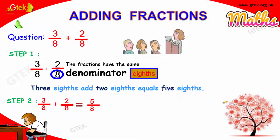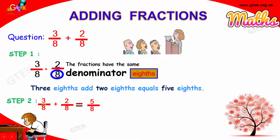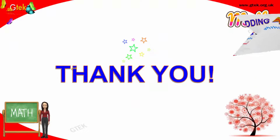Now we will see how to add fractions. We have 3 divided by 8 and 2 divided by 8. The denominators are the same — both are 8. When the denominator is the same, you just add the numerators. Three plus two is five, so the answer is 5 divided by 8.